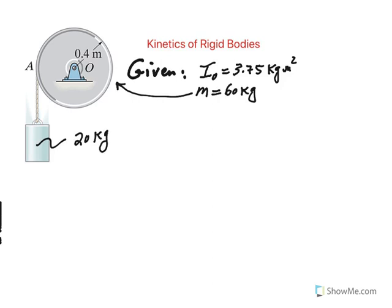is equal to 3.75 kilogram meter squared. And we also know that the mass of the disc or the pulley is 60 kilograms, and the mass of this block is 20 kilograms, released from rest.